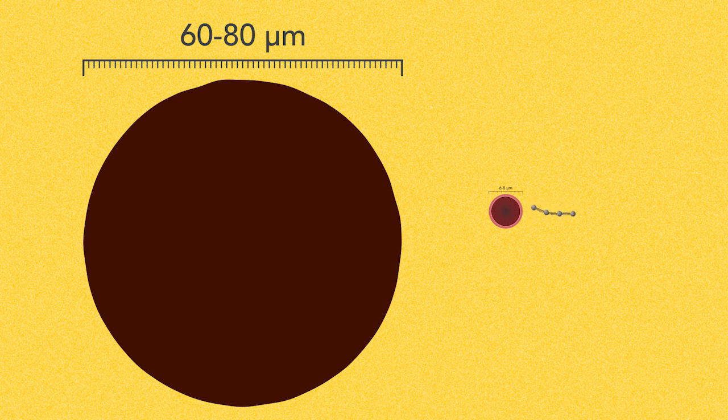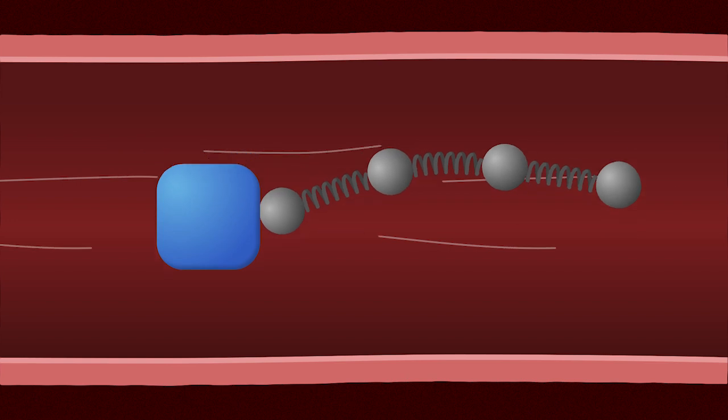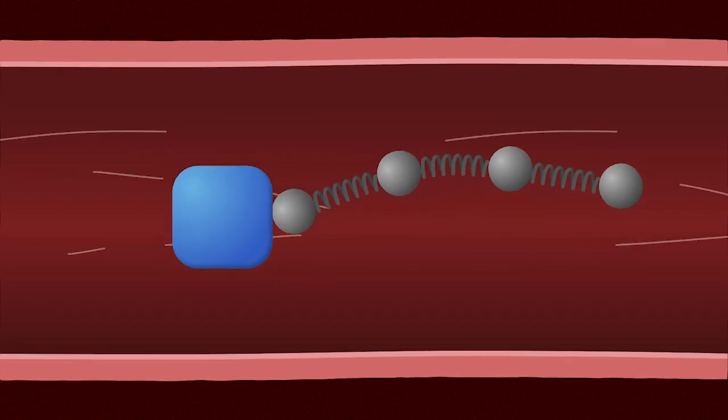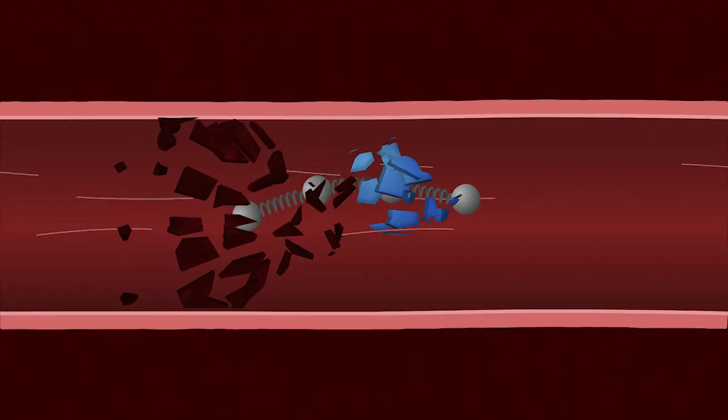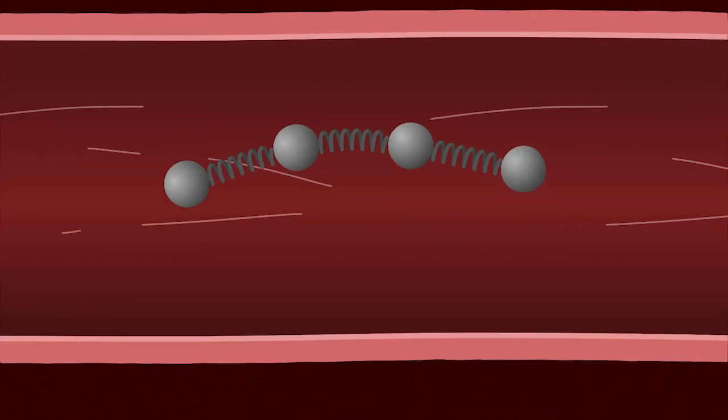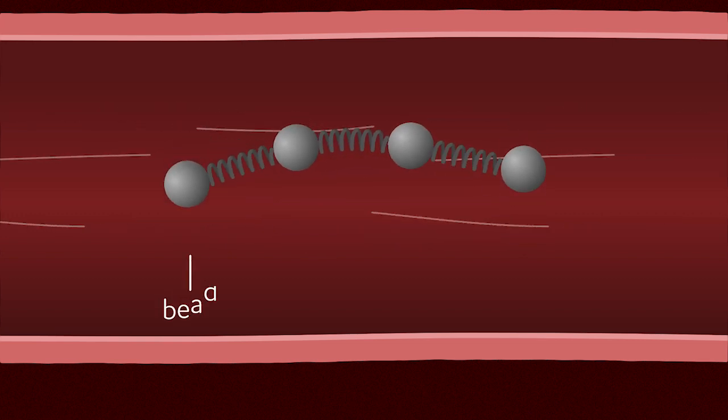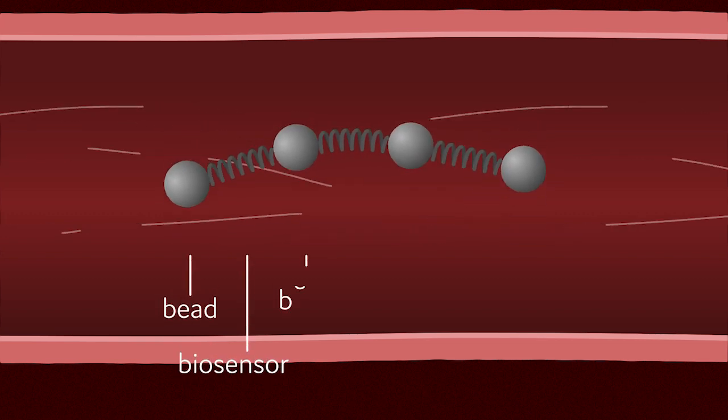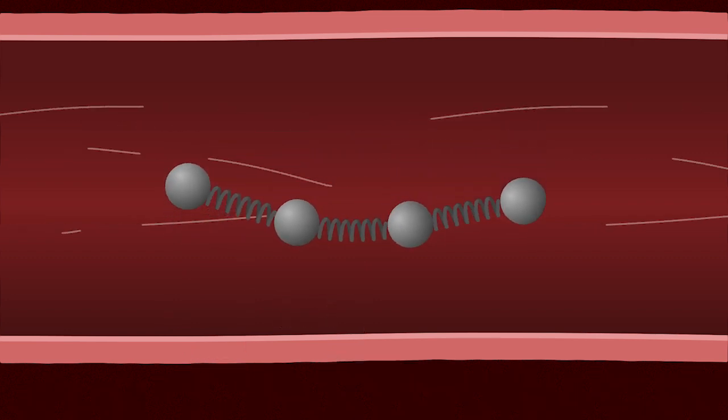An interesting avenue for using micro robots would be for delivery of cargo, like delivery of a drug. Are you delivering heparin to break up a clot, or doing something even stranger? We imagine these swimmers are held together by DNA origami—a bead, then a biosensor, then a bead, then a biosensor.